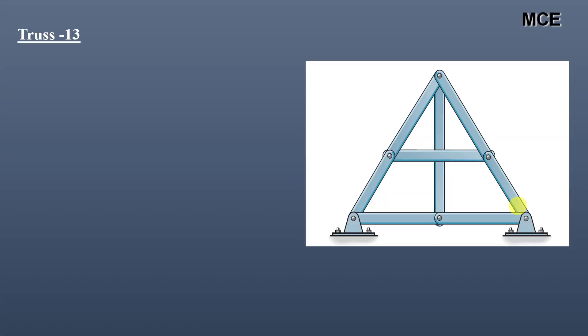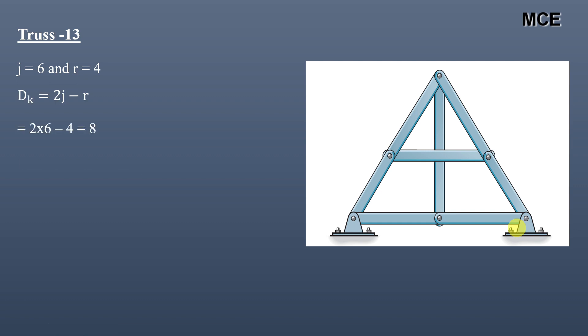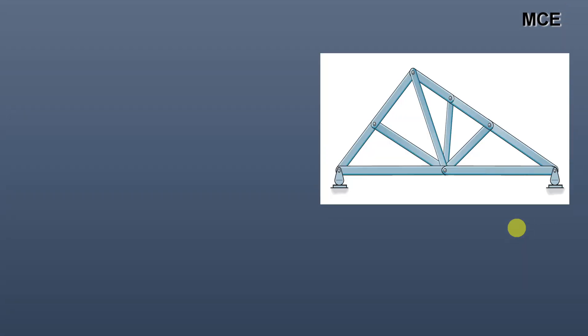For truss thirteen, this truss has a total of six joints and four support reactions — two at each of two hinge supports. The value of dk comes out to be eight, meaning this truss has eight degrees of freedom.